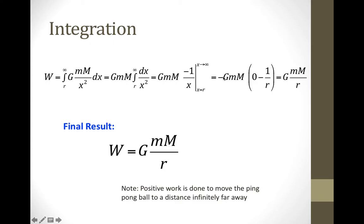We have to be careful with our plus and minus signs. The constant out in front is minus GMm, times the quantity of 0 — which is the limit as x goes to infinity — minus 1 over r, which is when x equals r. This minus sign and that minus sign cancel out, so the final result is the work is a positive quantity: GMm over r. We have to do positive work to move the ping-pong ball from a distance r all the way to infinity.